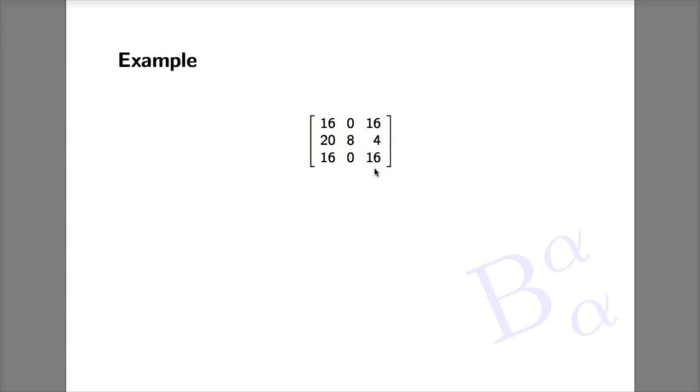You will also notice that every row adds up to thirty-two. Therefore, thirty-two is another eigenvalue corresponding to the eigenvector one, one, one.